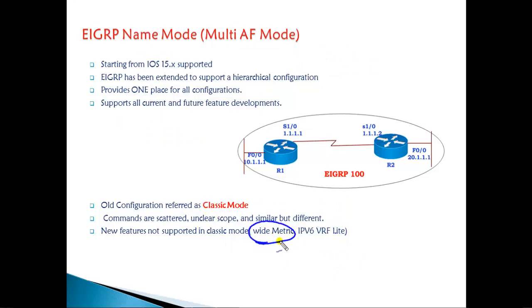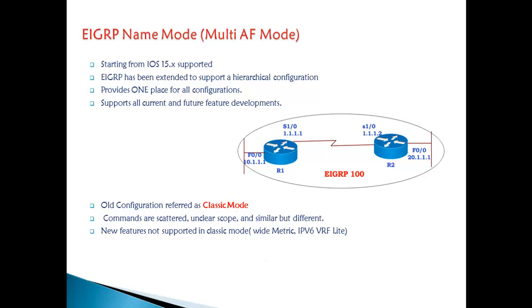Apart from hierarchical configuration, Named Mode supports some advanced options like wider metrics, and IPv6 via RLFA features are also supported in the new EIGRP configurations. In this video, I'm going to go into some more details on these features.